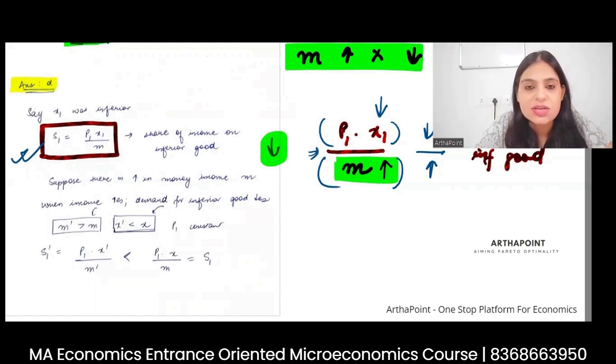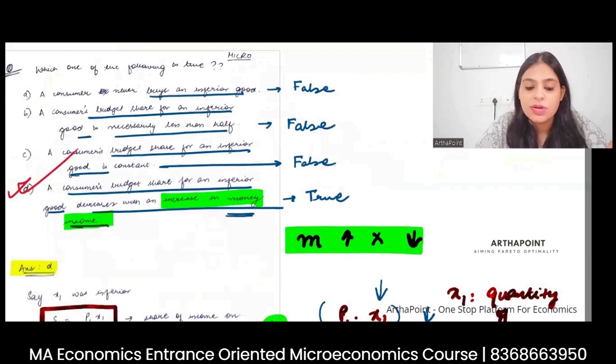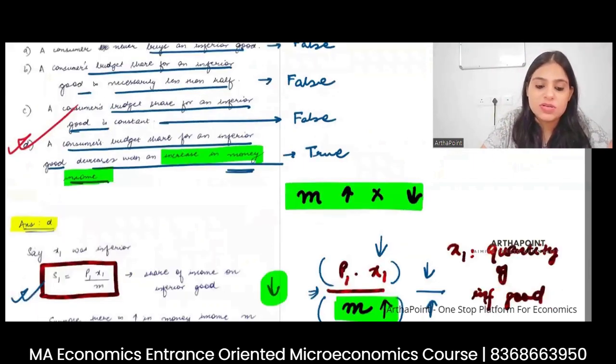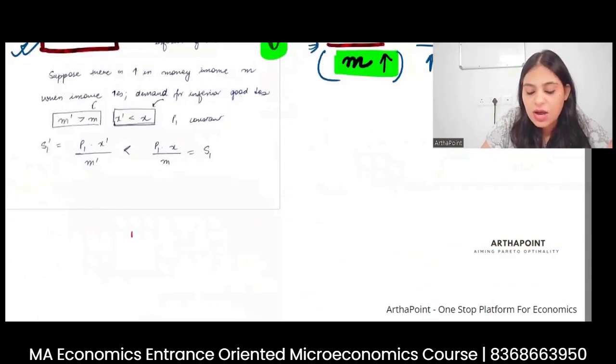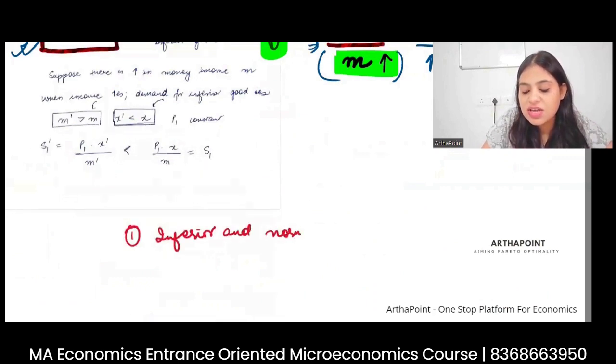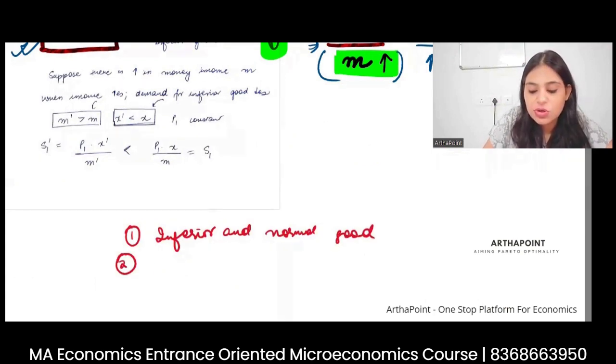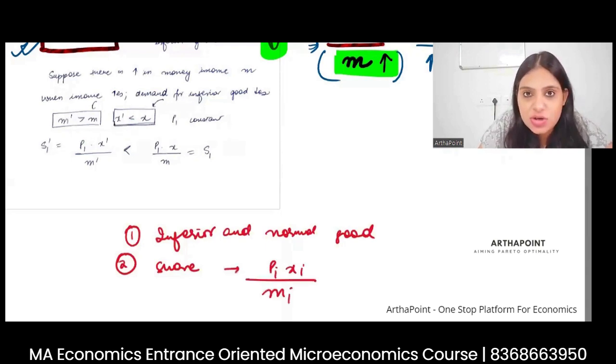Is this correct? Is this clear? What should you learn from this? One, what is the difference between inferior and normal goods? This is the takeaway you should take. Second, whenever the question talks about share, you should know it as P1X1 by M. Expenditure on the good divided by the income of the consumer.